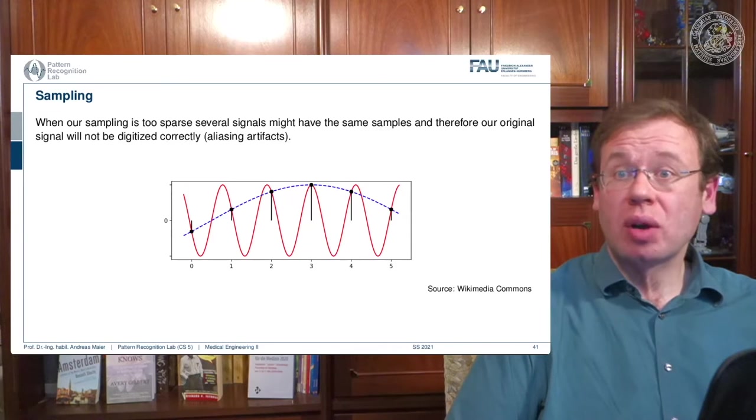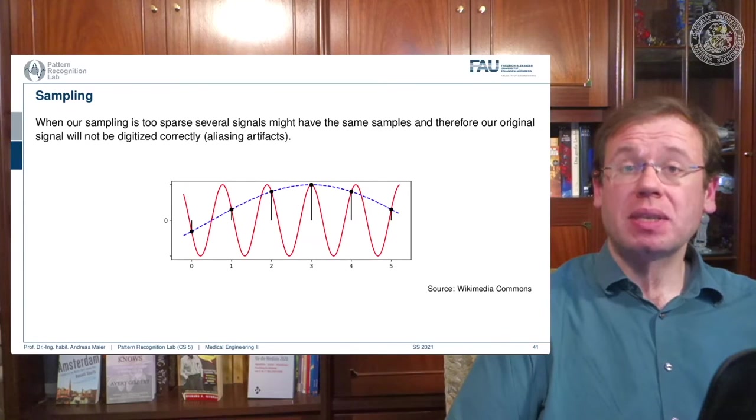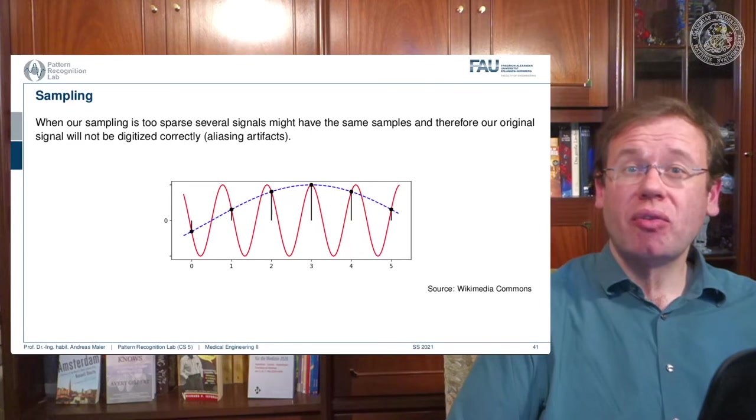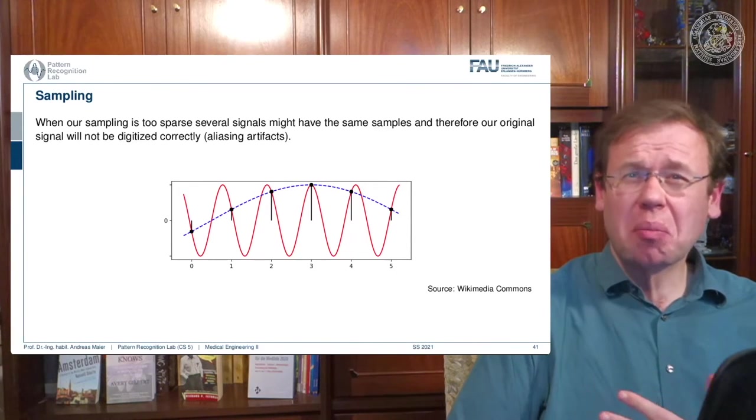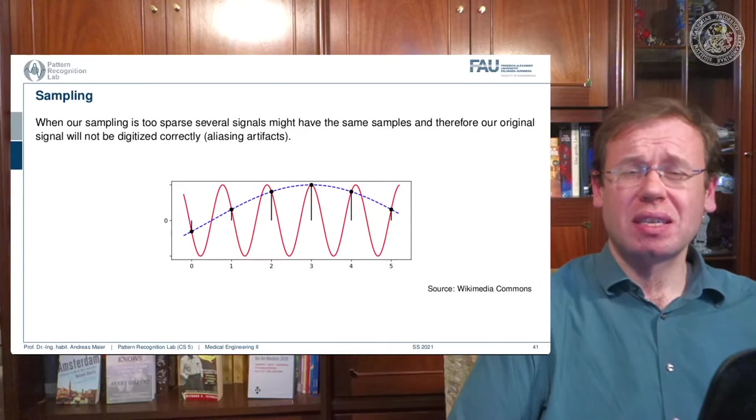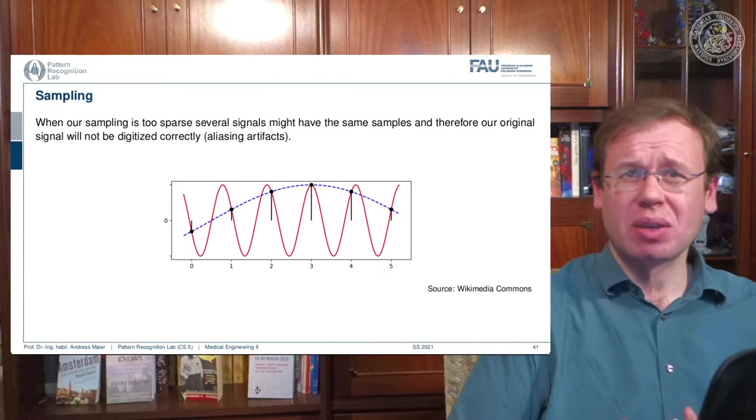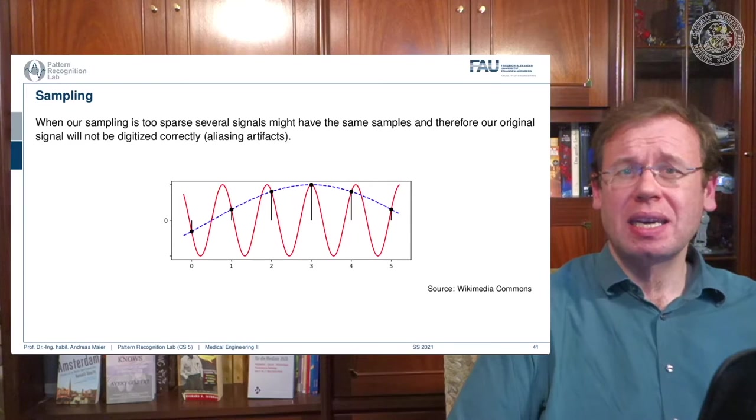As soon as you do a wrong sampling, what will happen is aliasing. So you're no longer able to reconstruct the original signal. And it's not just that there is faint mistakes or something. If you do the sampling wrong, you get completely different signals. So they look entirely different because you didn't obey the sampling frequency.